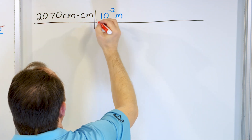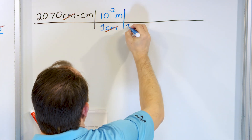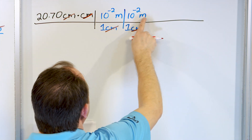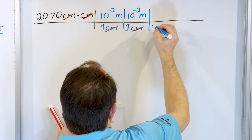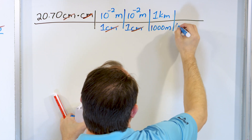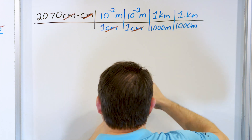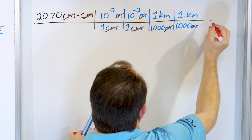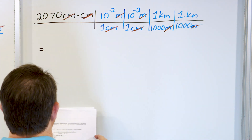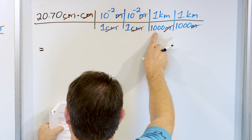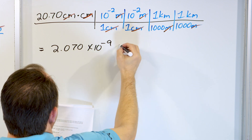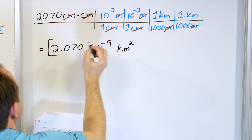We know that one centimeter is 10 to the minus two meters. Stopping there cancels only one centimeter, so we do it again: one centimeter equals 10 to the minus two meters — now both centimeters are canceled, leaving square meters. But we want square kilometers, so: 1,000 meters equals one kilometer — done twice so meters cancels twice — giving kilometers times kilometers, which is square kilometers. The result is 2.070 times 10 to the minus 9 square kilometers.